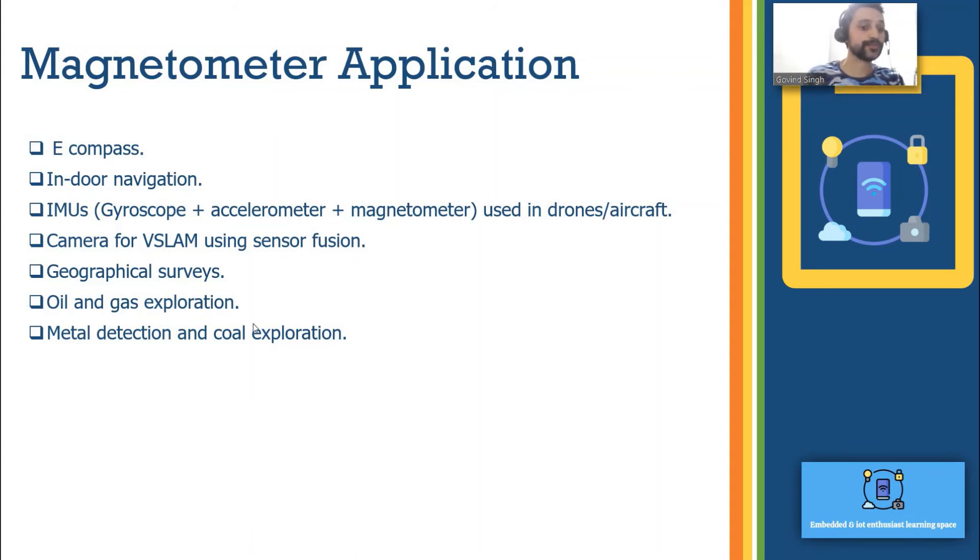This can be used for geographical surveys, oil and gas exploration, metal detection and coal exploration. Because the ferromagnetic property changes, and due to this your magnetometer will be sensing differently in comparison to the normal sensing.